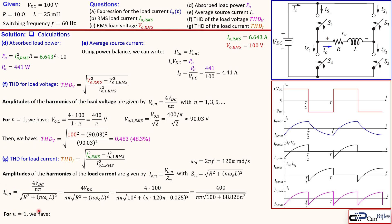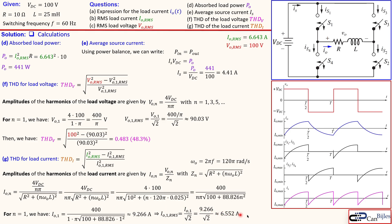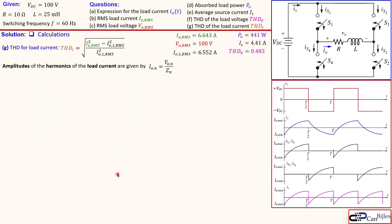For N=1, the peak load current harmonic is 9.266 amps, and dividing by √2 gives an RMS value of 6.552 amps. We now have sufficient information to calculate the THD for load current, knowing both the total RMS load current and the first harmonic RMS. These expressions apply for odd values of N only.